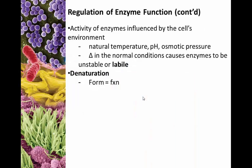There are a couple different ways to regulate enzymes. One of them is environmental regulation. How well enzymes work is very influenced by the type of environment that the cell is in, because enzymes are proteins. They can be denatured by things like high heat, low or high pH, osmotic pressure — so excess salinity, too much salt, or too much sugar — and this actually regulates how well certain types of enzymes work. Changes in normal conditions usually cause enzymes to be what we call labile, which is another word for unstable.